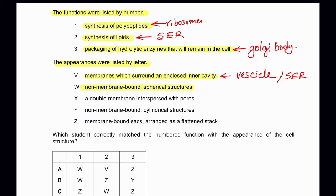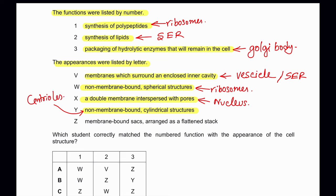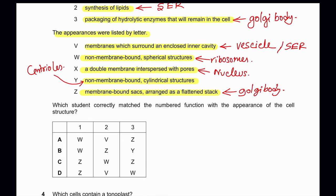W — non-membrane bound spherical structure: definitely ribosomes, as they appear spherical and are not membrane bound. X — double membrane interspersed with pores: definitely the nucleus, which has a double membrane and nuclear pores. Y — non-membrane bound cylindrical structures: definitely centrioles. Z — membrane-bound sacs arranged as a flattened stack: this is the Golgi body. The question asks which student correctly matched the numbered function with the appearance of the cell structure.